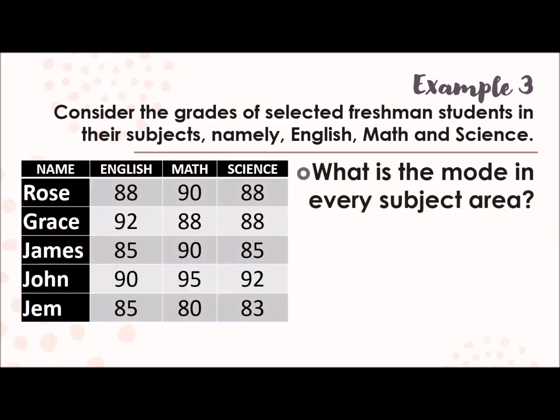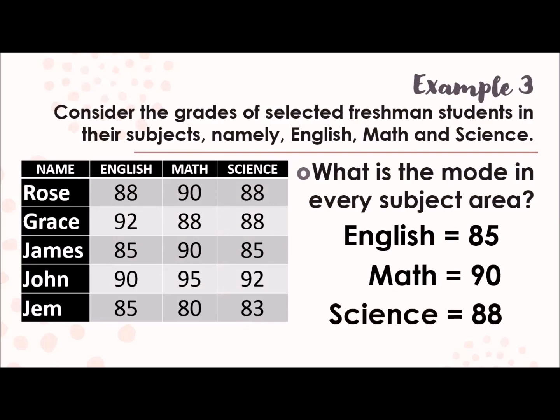What is the mode in every subject area? In every. That means, in each subject. In English, what repeats the most? That is 85. How about in mathematics? We have 90. In science, we have 88. So that's it. Because it's just mode in every subject.